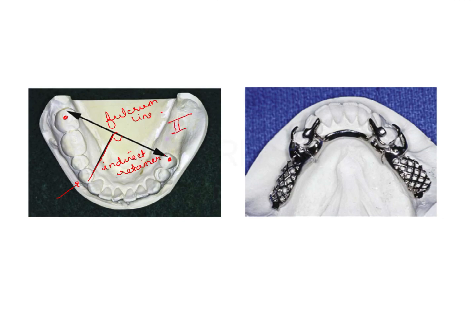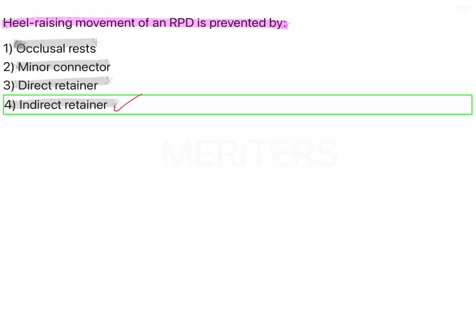Here this is a Kennedy's Class 2 situation, and here is where you will place the indirect retainer. In image number 2, it is a Kennedy's Class 1 situation because there is a bilateral edentulous area. This additional component has a cingulum rest on the canine and an occlusal rest on the premolar. So a combination of these two is the indirect retainer. Indirect retention can minimize the heel raising effect, and therefore the correct answer is option number 4.